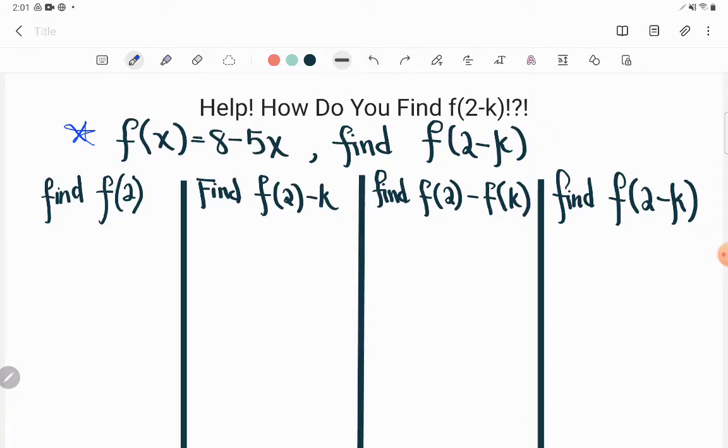So the problem that the student was given here was they were given a function f(x) is equal to 8 minus 5x and they were asked to find the function value at an interesting place. It says find f of 2 minus k, meaning that they want us to find the function value when x becomes 2 minus k. That's a little weird but that's what that notation means. Find the function value when you turn x into 2 minus k.